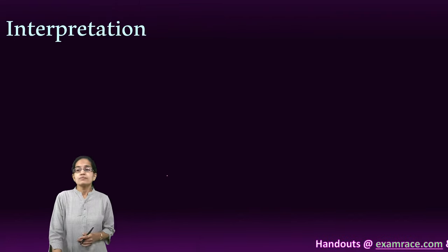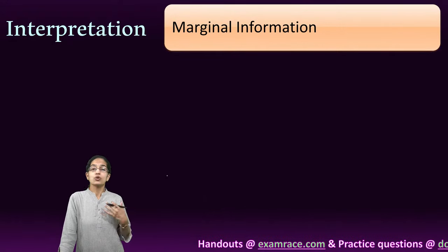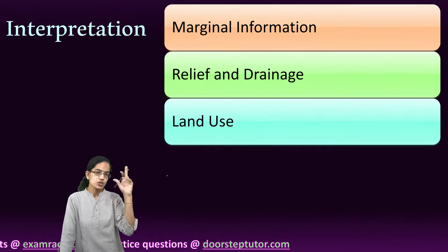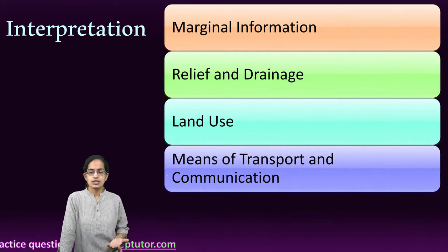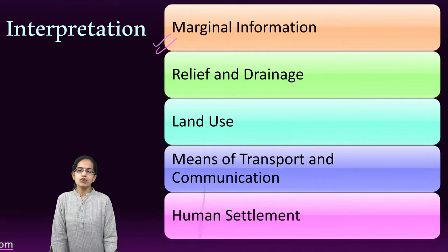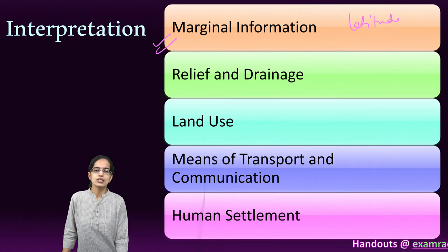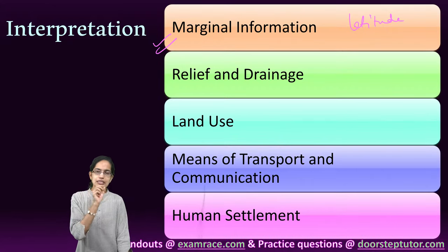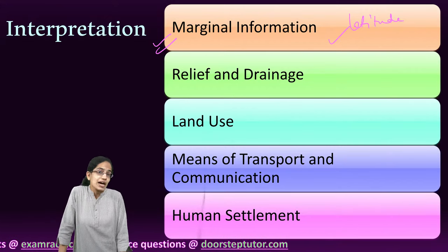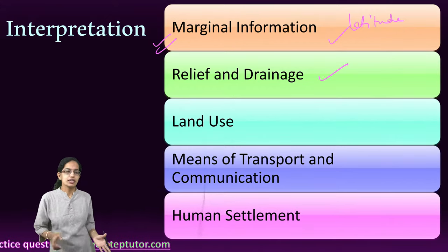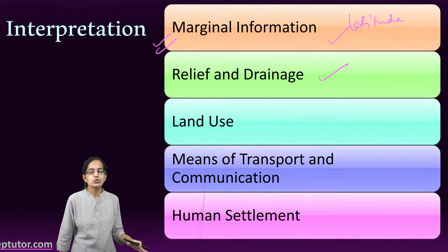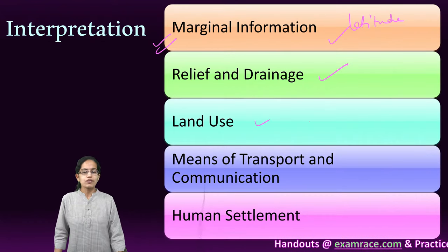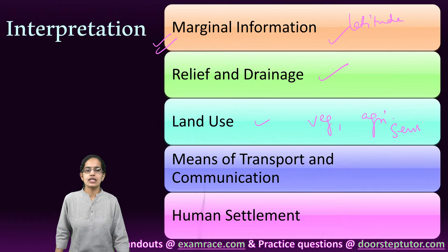Interpretation of topo sheets is very important. What we can infer from a topo sheet includes marginal information — latitude, longitude, exact location, degrees, minutes, scale — as well as relief and drainage: rivers flowing through the region, hills, plateaus, plains, land use including vegetation, the pattern of agriculture, and services that are available.